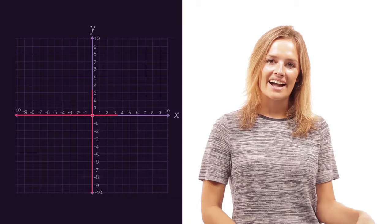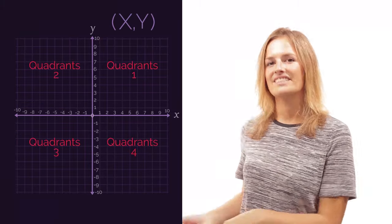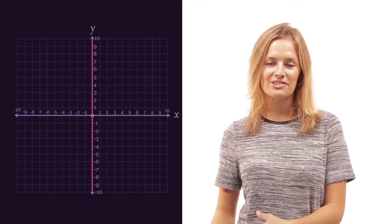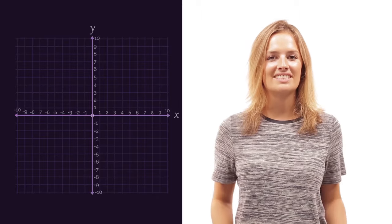So there we have axes, coordinates and quadrants. In the next video we're going to look at horizontal and vertical lines and two important diagonal lines.